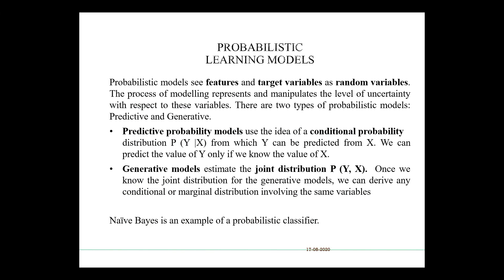Probabilistic models see features and target variables as random variables. When they are modeling, they assume that Xi and Y — where the target variable is Y and the features are the Xi values — are all assumed to be random variables. The process of modeling represents and manipulates the level of uncertainty with respect to these variables.